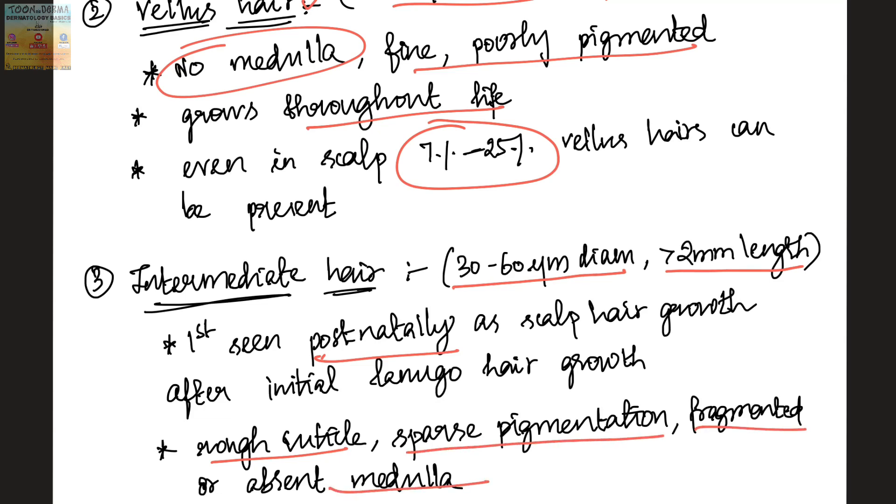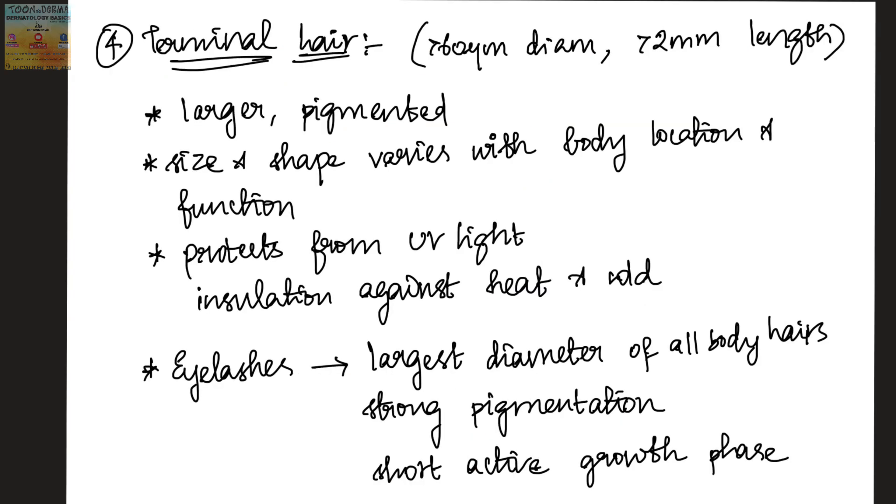Now coming to terminal hair, it is about more than 60 micrometers in diameter and more than 2 mm in length. Compared to the other types of hair, this terminal hair is large and pigmented. The size and shape of terminal hair varies with the body location and function.